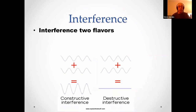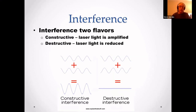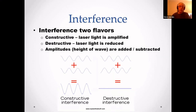Let's talk about interference. It comes in two flavors: constructive interference, where the laser light is amplified and the height of the waves is added, as shown in the diagram at the bottom left; and destructive, where the laser light is reduced and the heights of the waves are subtractive. The amplitude — the height of the waves — is either added or subtracted.